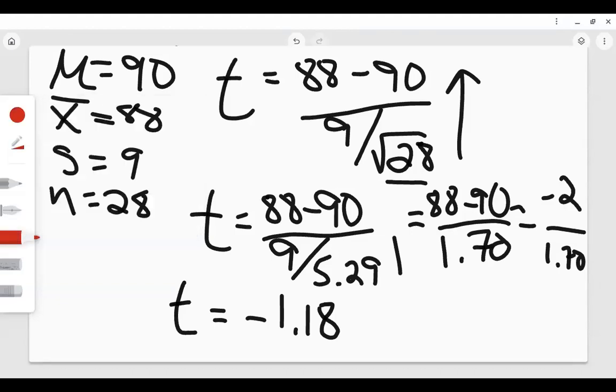They think that this should be 27 here. So they think it's the sample size minus 1. But actually we only use the n minus 1 when we're using our t table to find our rejection region. So here we will leave it as n and not n minus 1.